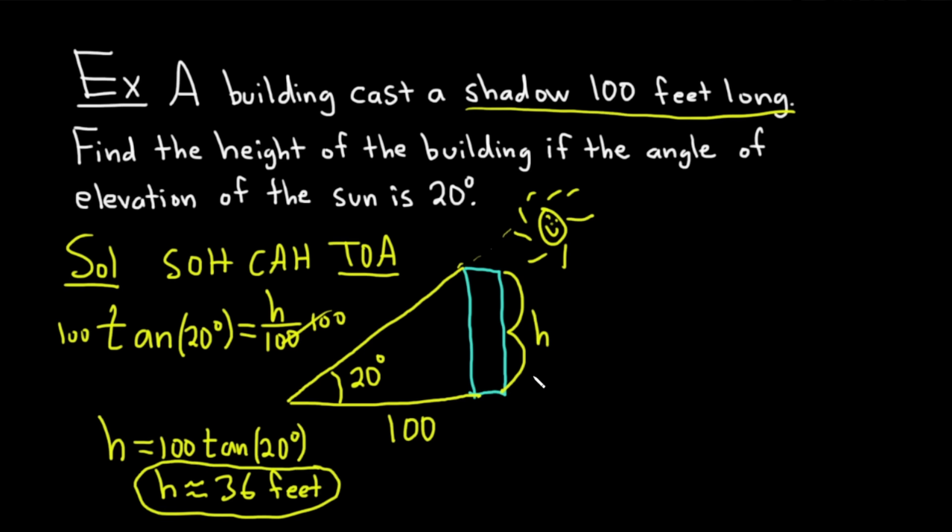And so that would be the height of the building. The building is approximately 36 feet. And it's casting a shadow that is 100 feet long when the angle of elevation of the sun is 20 degrees. Kind of an interesting problem.